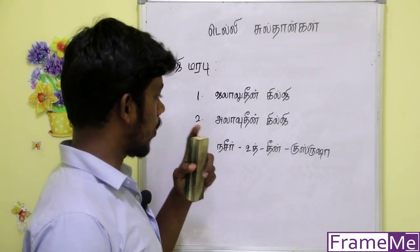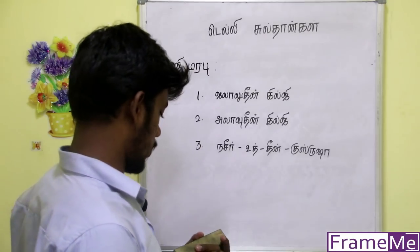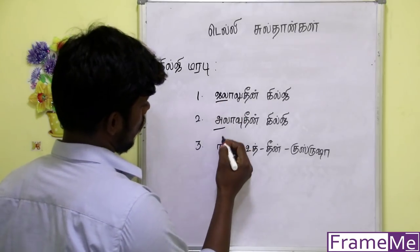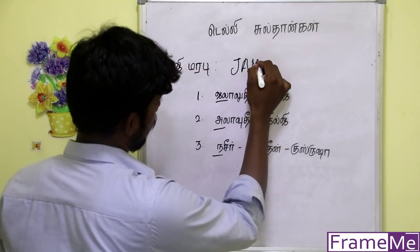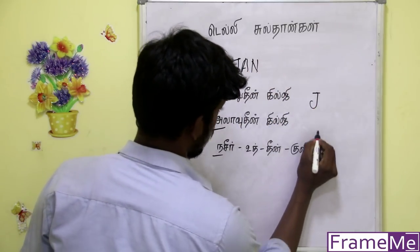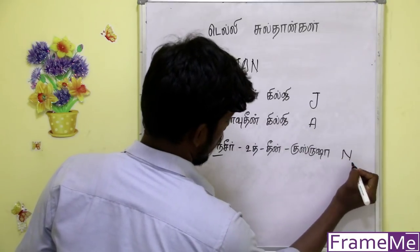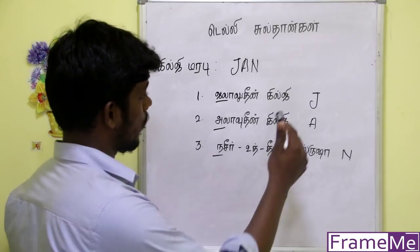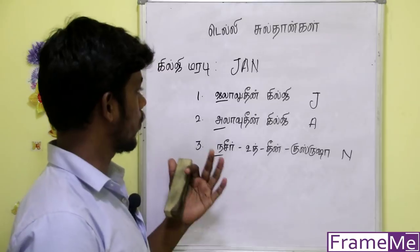This is Jalaluddin Kilji, Alauddin Kilji, Nazir Uthun Kusura, and all the others. We can use this one — J.A., let's say JAN. Jalaluddin Kilji is J, Alauddin Kilji is A, Nazir is N. If we ask about Jalaluddin Kilji — Nazir. This is the one.